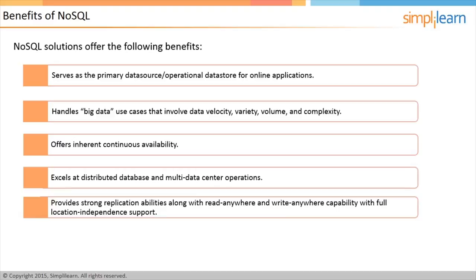Easy Replication for Distributed, Location-Independent Capabilities: To avoid data loss, a good NoSQL solution provides strong replication abilities, including Read Anywhere and Write Anywhere capability with full location-independent support. This means you can write data to any node in a cluster, have it replicated on other nodes, and make it available to all users irrespective of their location. The write capability must also ensure data safety in the event of a power failure or any other incident.